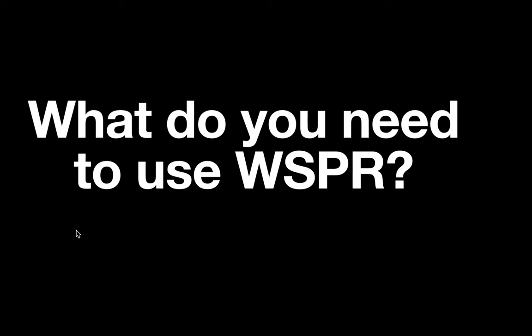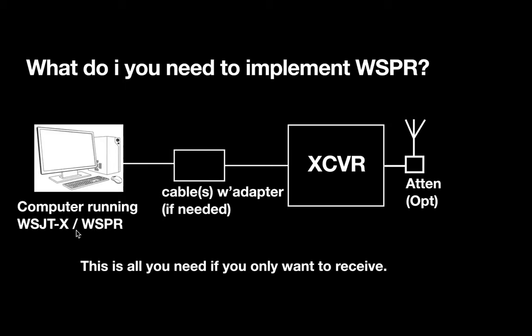So let's see what you need to use WSPR. You've got to have a computer running WSJT-X software, and within that software package is the WSPR software. You're going to have to have a receiver or transmitter — ideally a transceiver. You've got to have a way to connect the computer to the transceiver, which could be a USB cable, serial cable, and audio cables. Then you've got to have an antenna and a way to connect to it, typically coax.